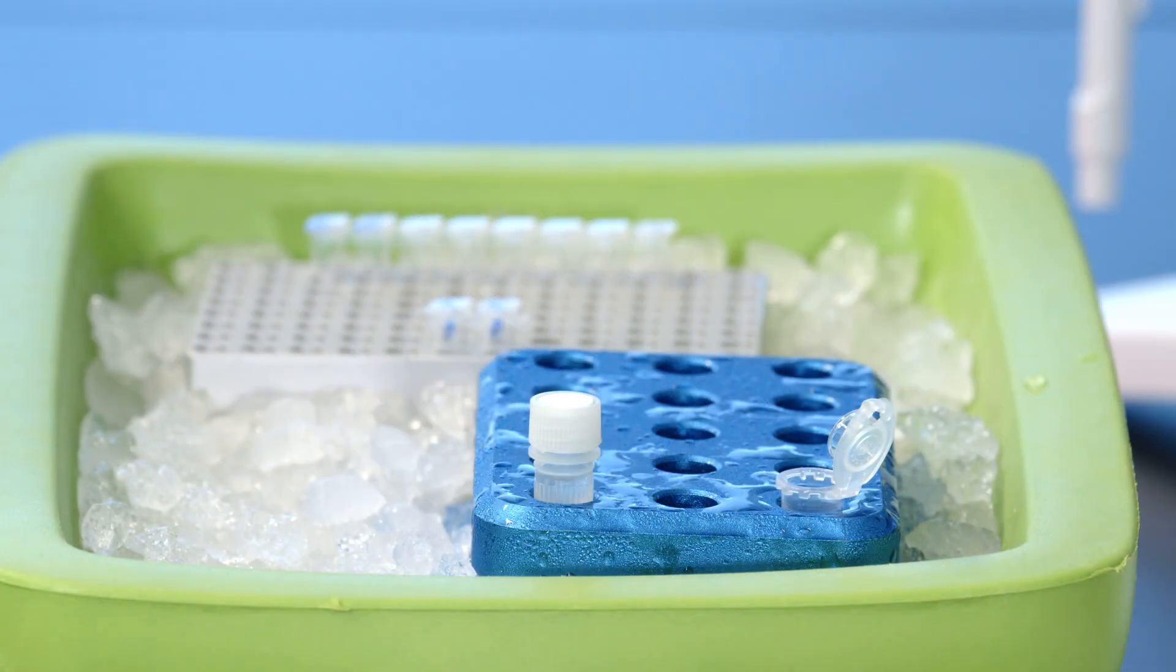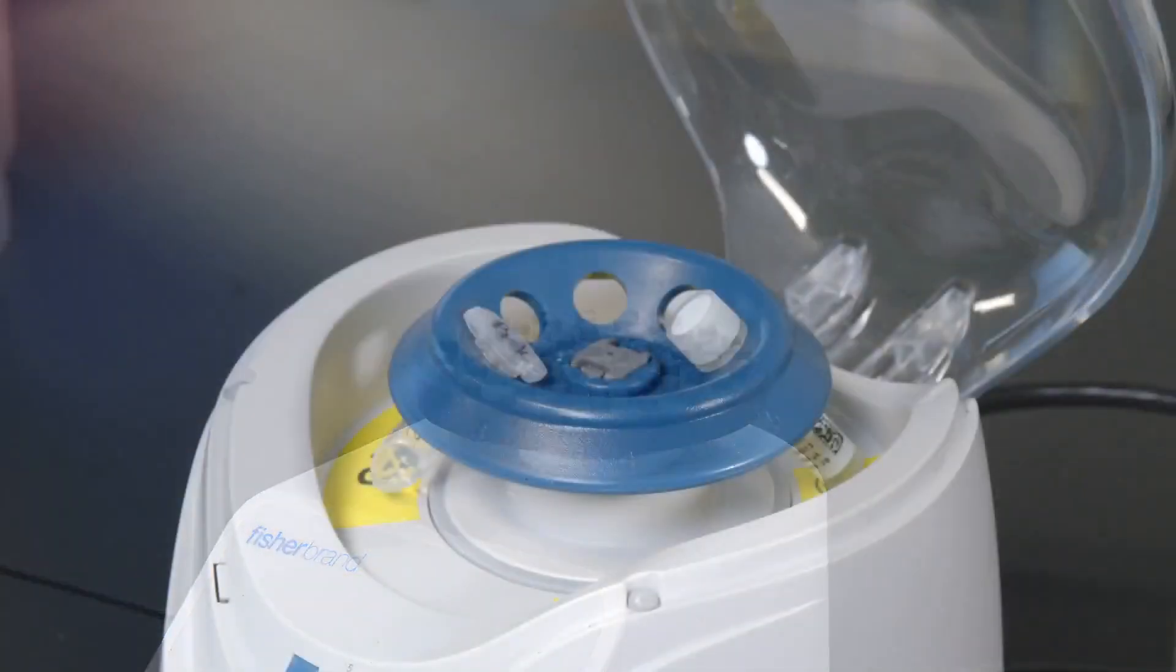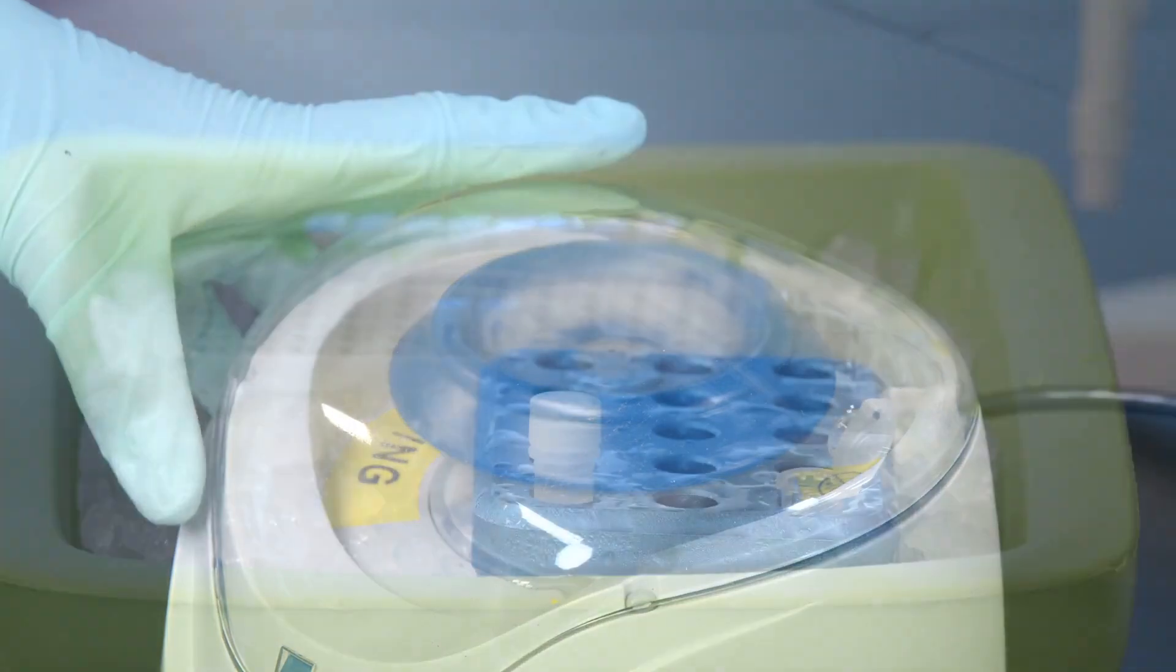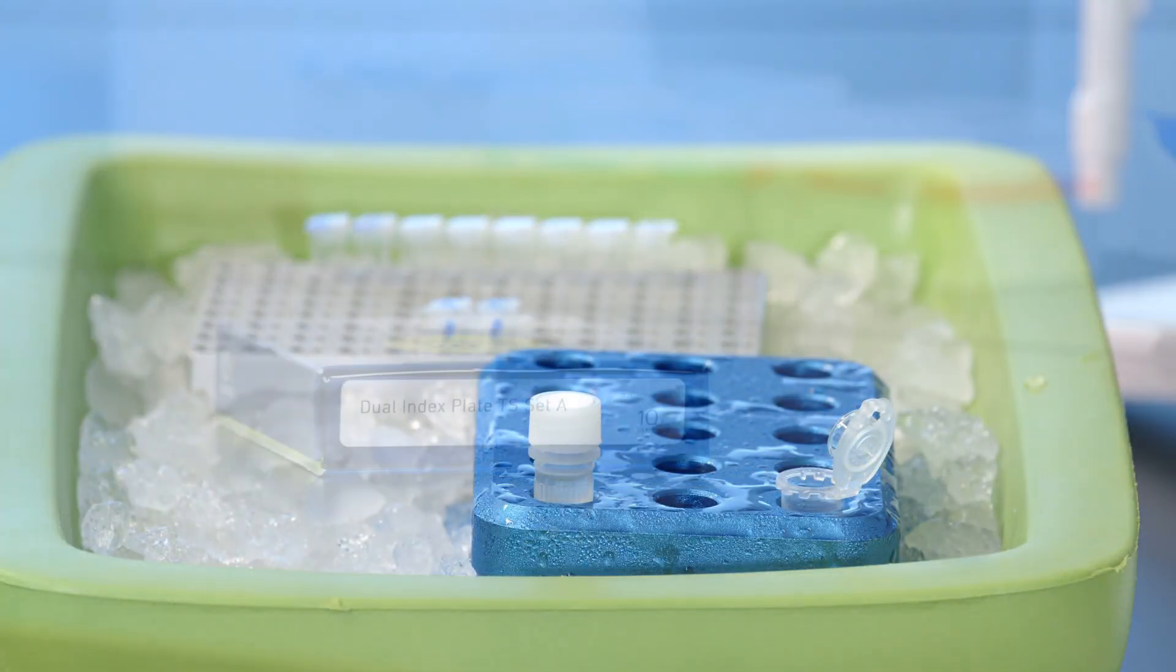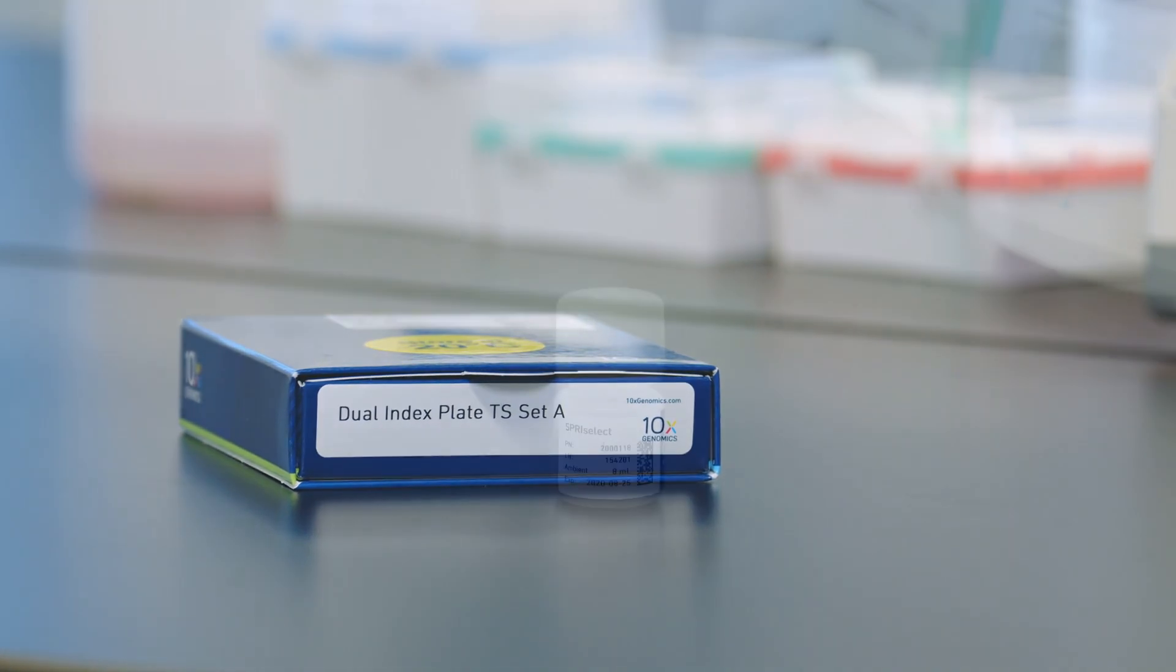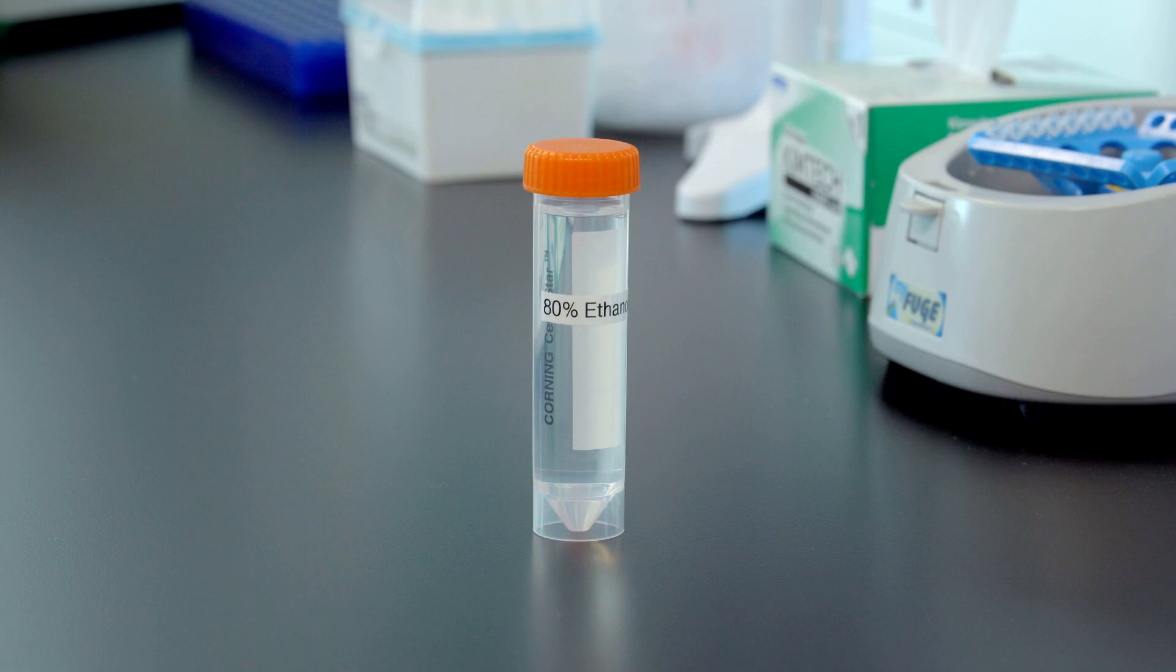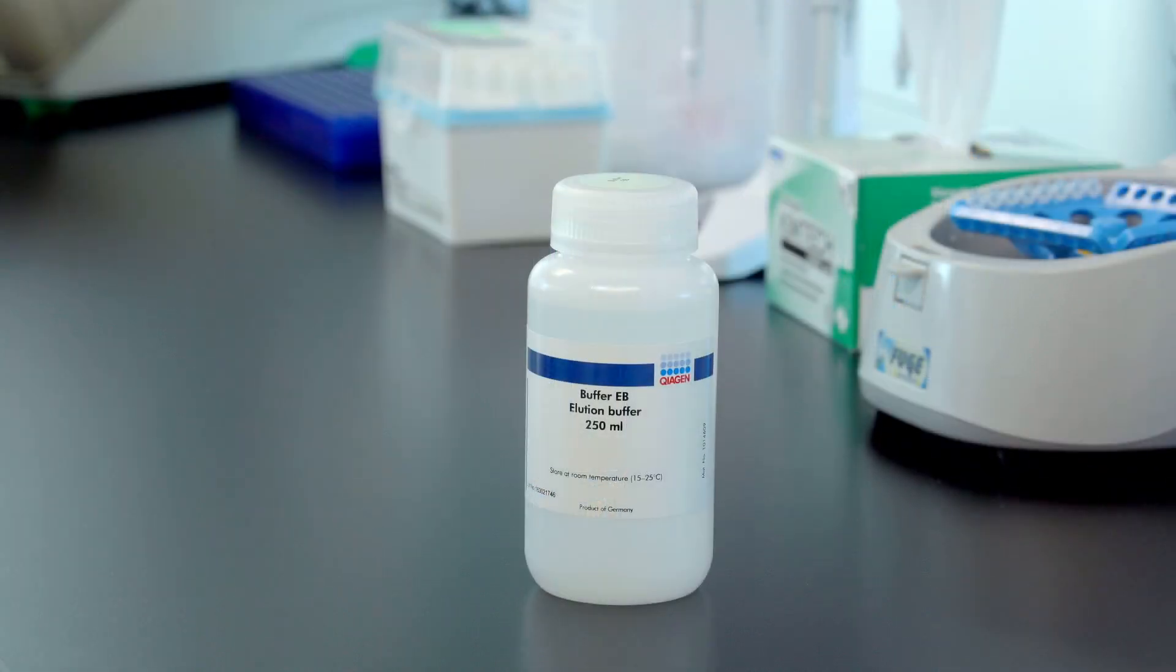We have determined the amplification cycle number and will now perform sample index PCR and SPRI select cleanup. We have Amp Mix B—vortex, centrifuge briefly, and place on ice. We have the dual index plate TS set A, SPRI select reagent, freshly prepared 80% ethanol, and buffer EB.